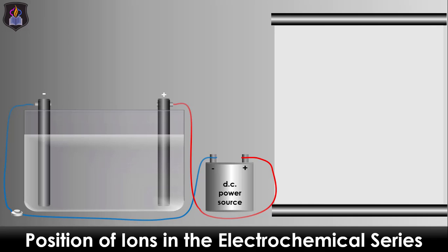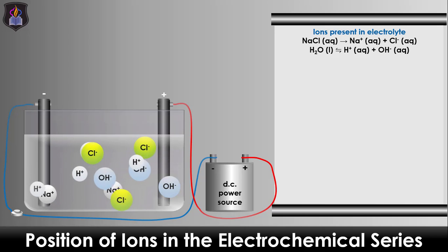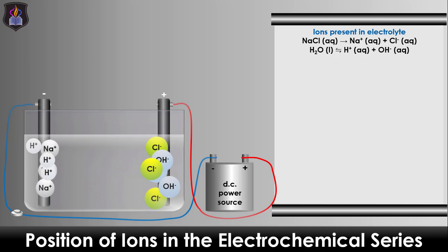Let's use the electrolysis of dilute sodium chloride solution — which contains sodium ions, chloride ions, hydrogen ions, and hydroxide ions — as a case study. When connected to the power supply, the ions migrate to the oppositely charged electrodes based on the law of electrostatic attraction. At the anode, the chloride and hydroxide ions compete for discharge.